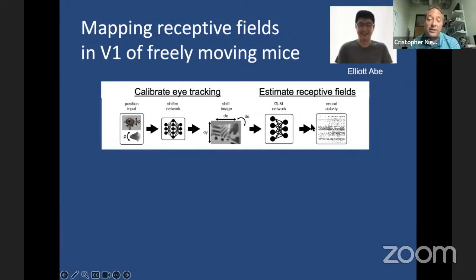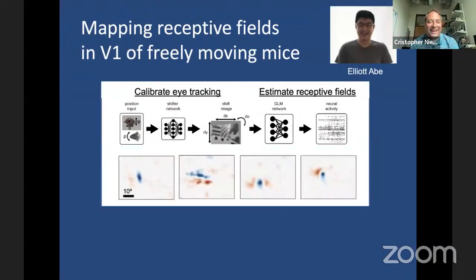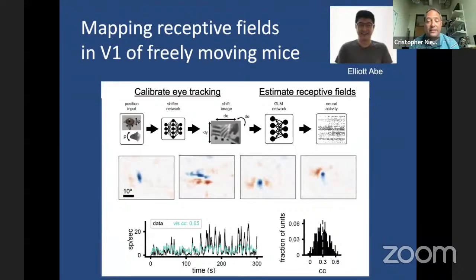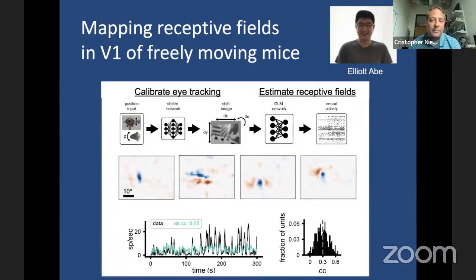Does this actually work? Quite remarkably, yes. We get receptive fields that look much like those from the beginning of my talk — elongated off-receptive fields, edges between light and dark, nice Gabor-like receptive fields. Not only do we get receptive fields, but we can do a decent job of predicting neural activity — for the best neurons, a correlation coefficient of about 0.6, and on average about 0.3 between measured neural activity and our network predictions.